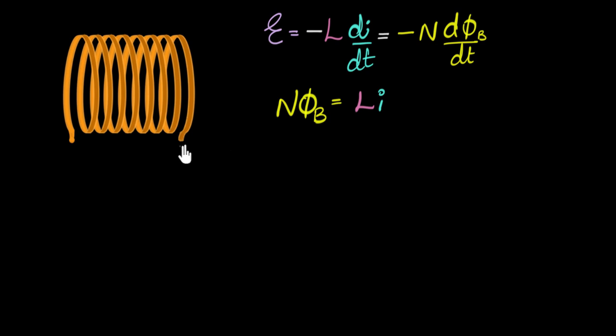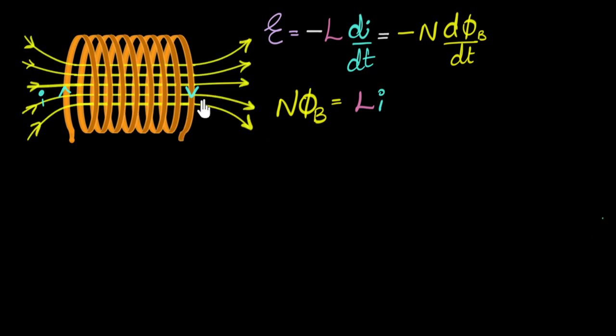Of course it makes sense. When you pass some current through it, some current I, it's that current that's generating the magnetic field. And it's that magnetic field that's causing the flux. So more current gives you more magnetic field, giving you more flux. So it makes perfect sense. And the constant is the self-inductance.